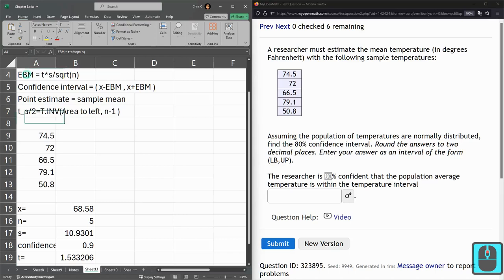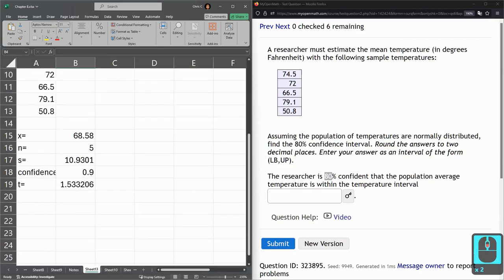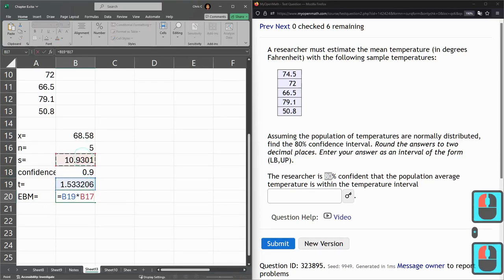Next up is EBM. Right here, it's T times S divided by square root of N. EBM equals T times S divided by square root of N. All right, that's our EBM.